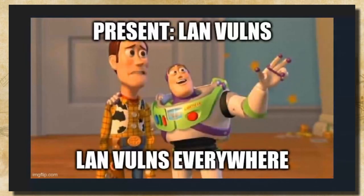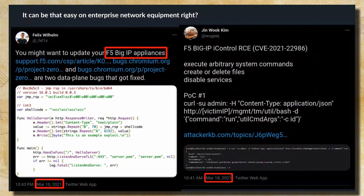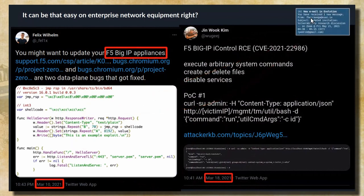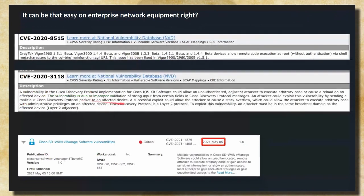In the present, to summarize, we have LAN vulnerabilities everywhere. And it can't be that easy for enterprise network equipment, right? Wrong. Look at these very recent vulnerabilities — March 10th and March 18th — in F5 BIG-IP appliances, another major manufacturer of enterprise equipment. Trivial vulnerabilities: a very simple exploit, the simplest you can imagine, and an even simpler command injection. You wouldn't expect this on a device costing dozens of thousands of dollars. We also have more recent ones on Cisco devices and Draytech core enterprise routers.